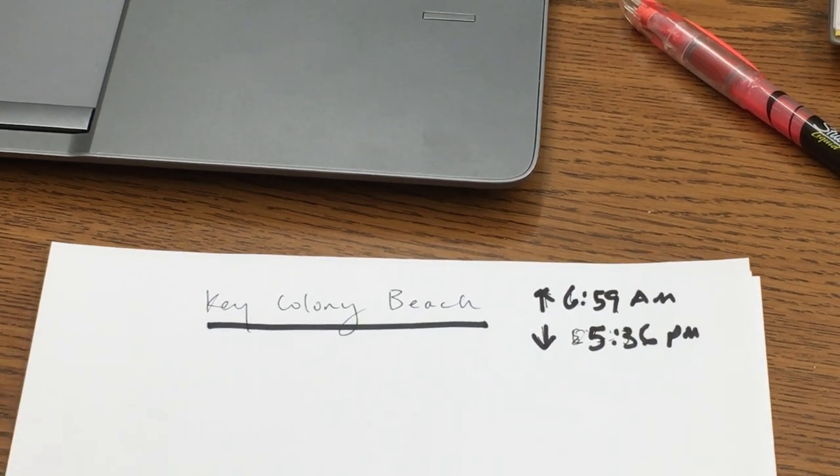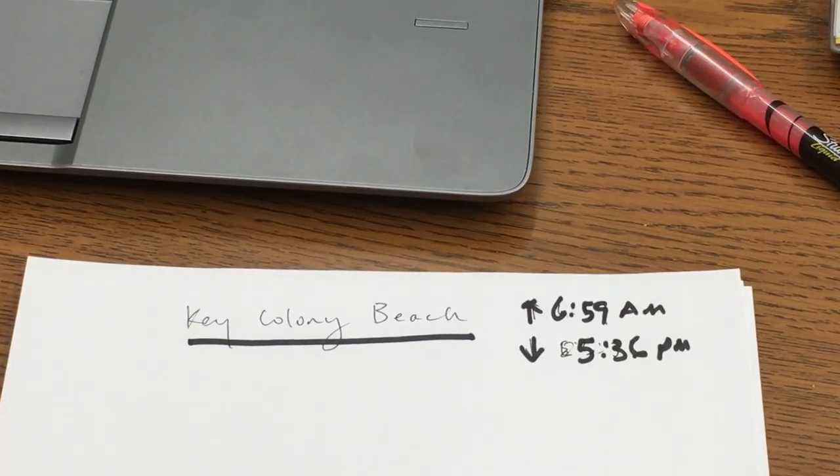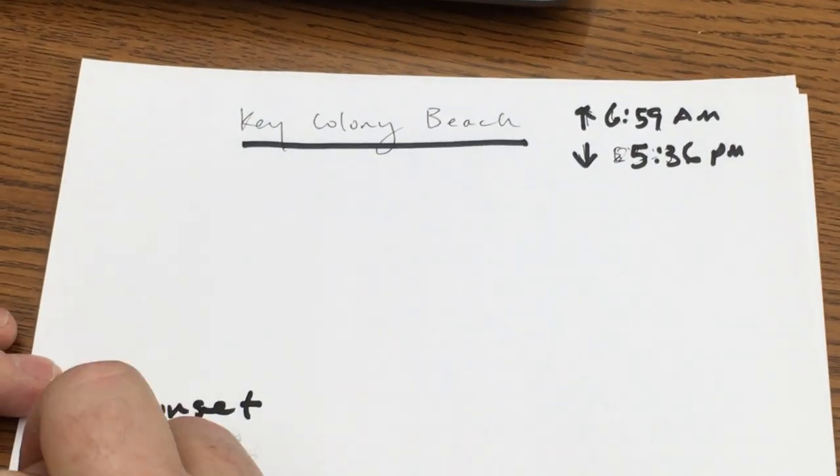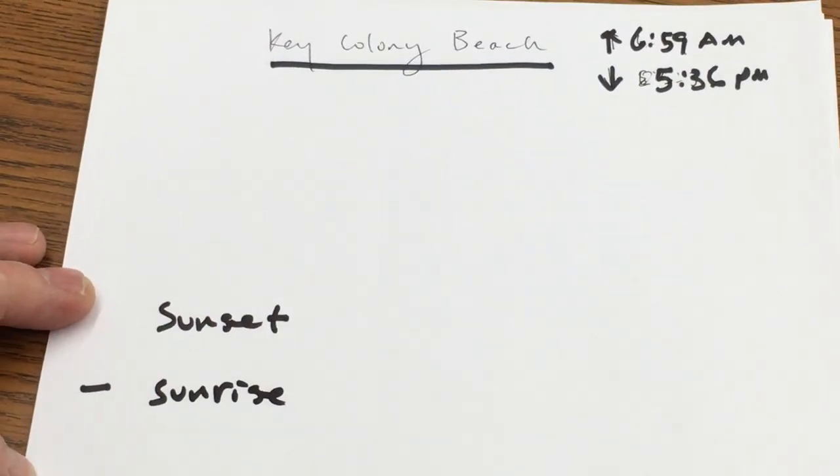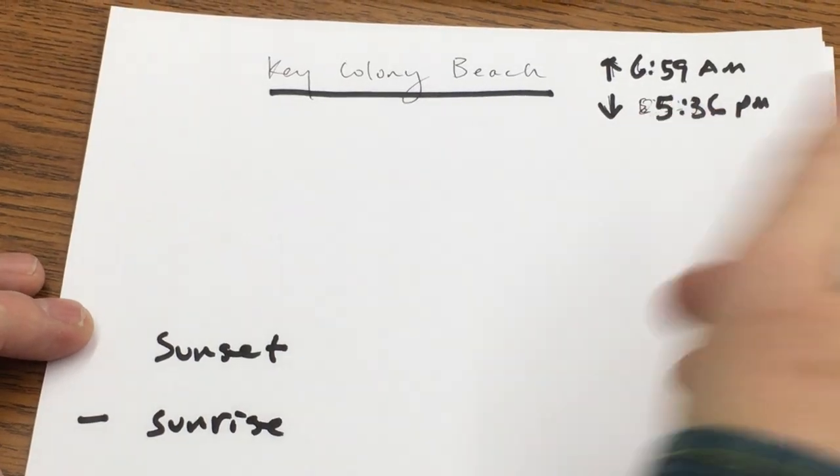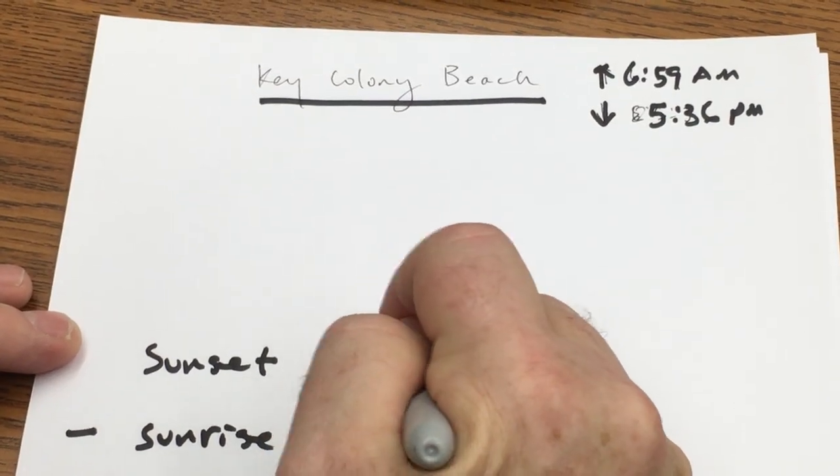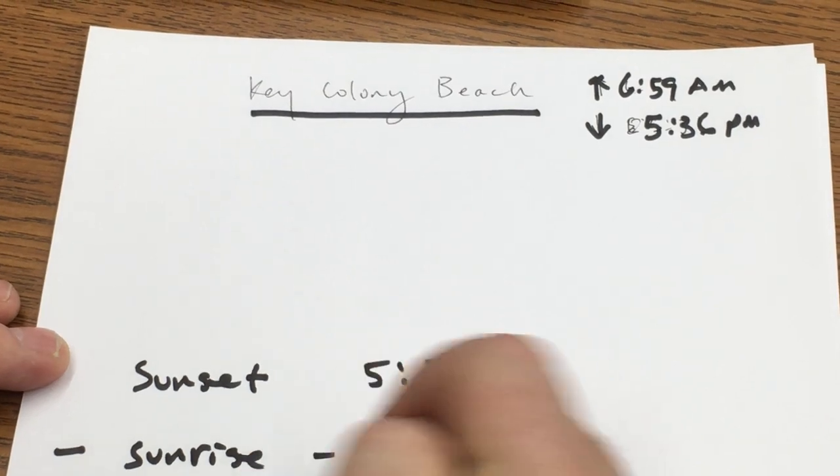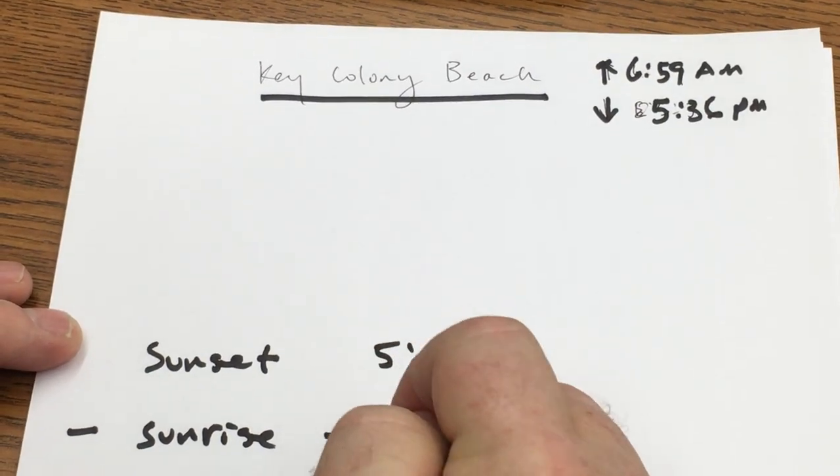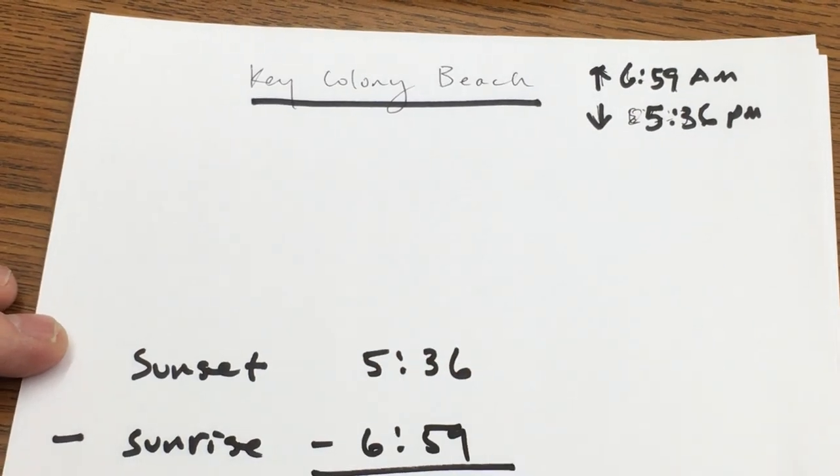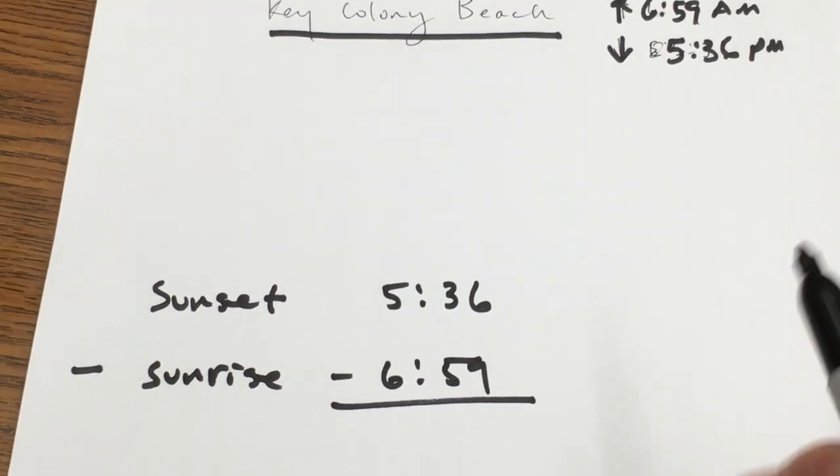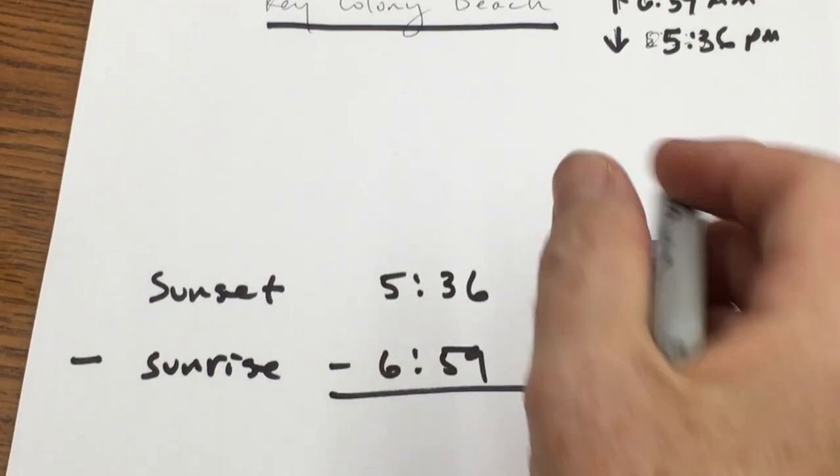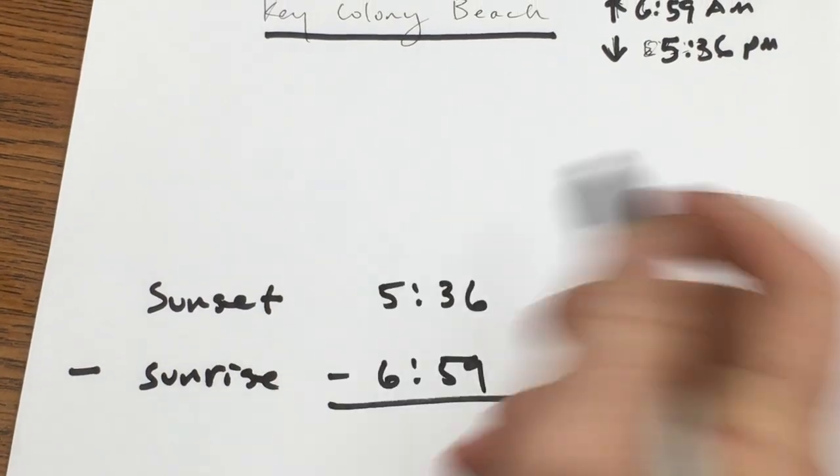So the way to do this is to set up your sunset minus your sunrise. And so I have 5:36 minus 6:59. Now you really can't do that. So the thing you need to do is you need to change the PM to military time.